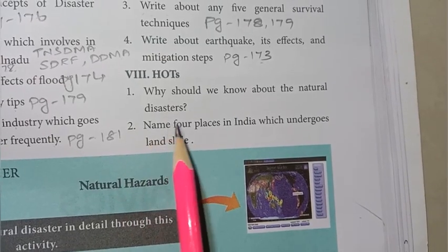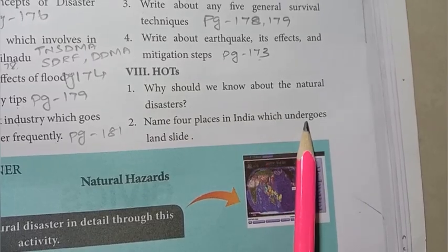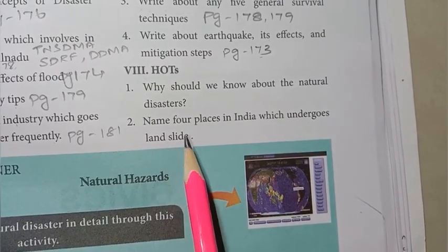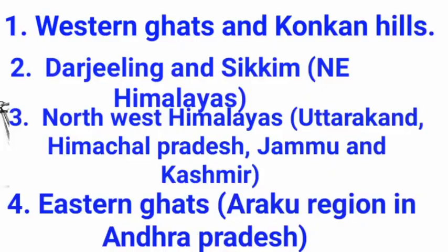Second HOTS question: name four places in India which undergo landslides. Answer: first, Western Ghats and Konkan Hills; second, Darjeeling and Sikkim in North East India; third, North West Himalayas including Uttarakhand, Himachal Pradesh and Jammu and Kashmir; fourth, Eastern Ghats, Araku region.